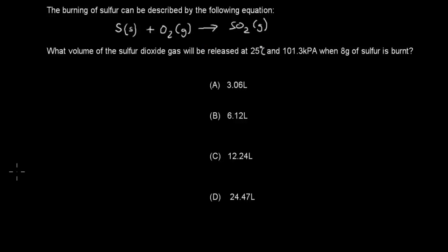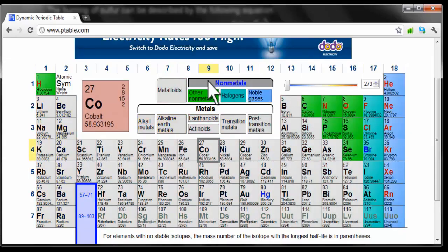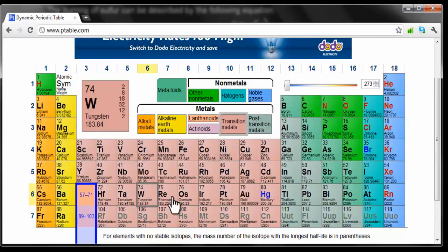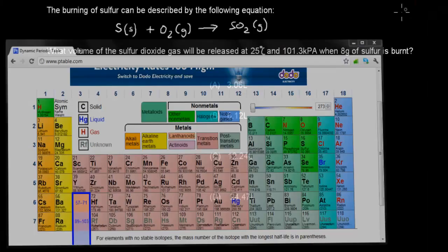Next question: the burning of sulfur can be described by the equation — sulfur plus oxygen goes into sulfur dioxide. What volume of sulfur dioxide gas will be released at 25°C and 1.13 kilopascal when 8 grams of sulfur is burned? You'll need the data table attached in the description below for this question.